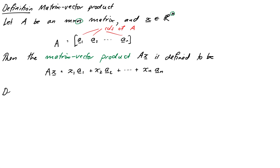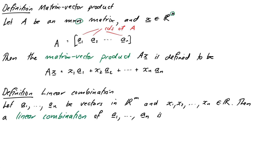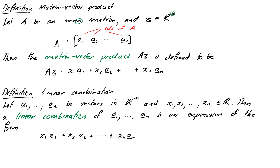Now, the expression on the right is called a linear combination of the columns, so we'd better quickly define what that means. The definition of linear combination is: take N vectors in R^M, and let x1 through xn be scalars in R. Then a linear combination of the vectors a1 through an is an expression of the form x1*a1 + x2*a2 + ... + xn*an. It's just the sum of scalar multiples of those vectors. The values x1 through xn are called the coefficients of the linear combination.